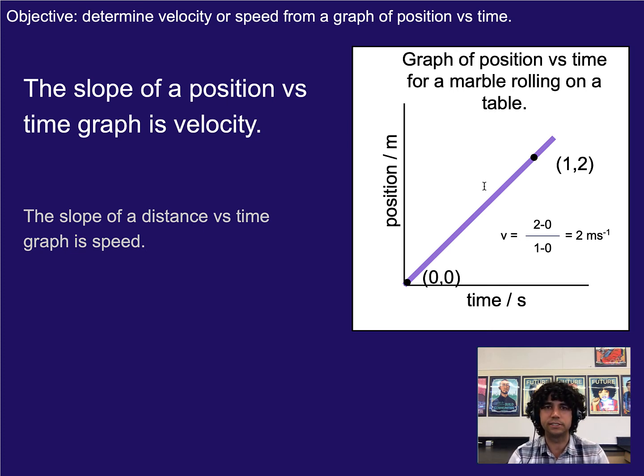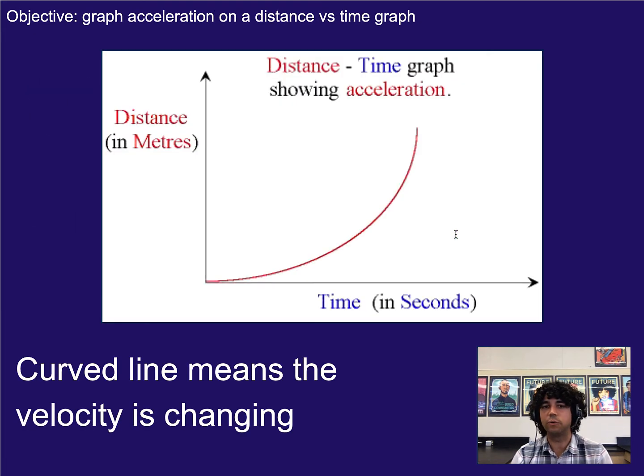Well if we are seeing something accelerate, that means its velocity is changing. So that means we would expect to see a graph where the steepness is changing, or in other words, a graph where it curved. So anytime you have a distance or position versus time graph that curves, that means that the speed or velocity is changing. That also technically means it's accelerating in some way shape or form.